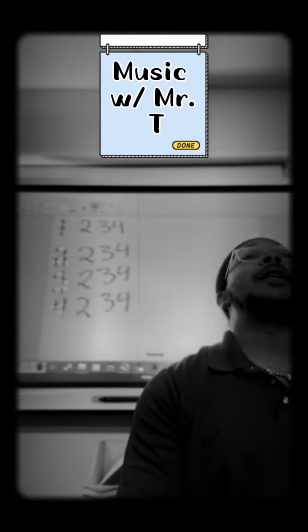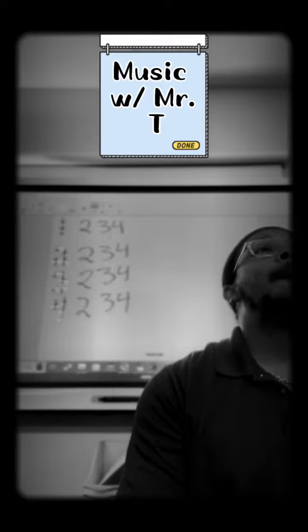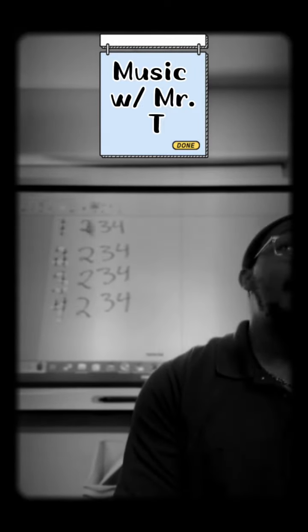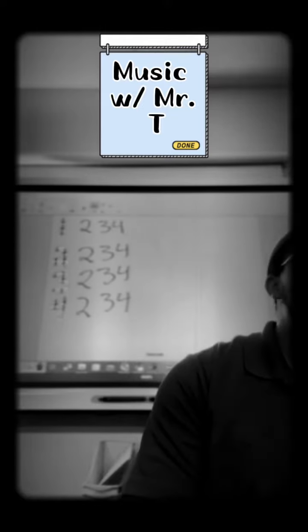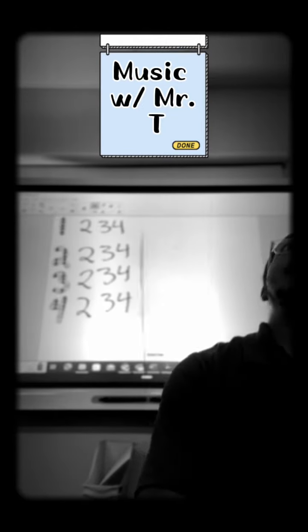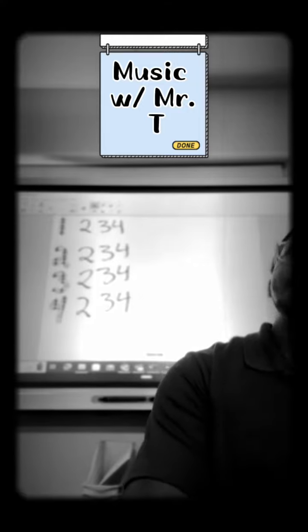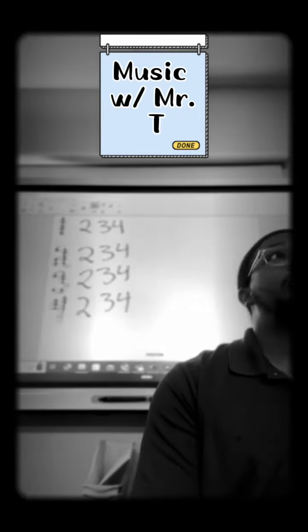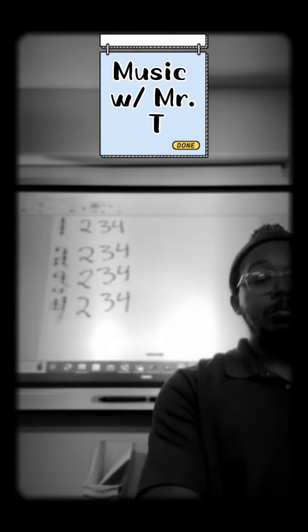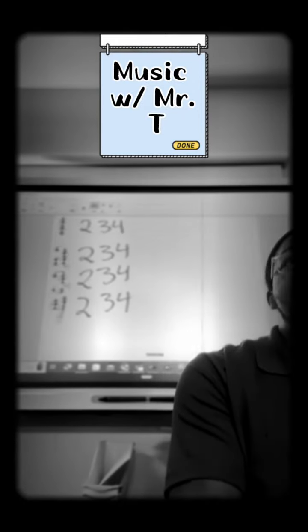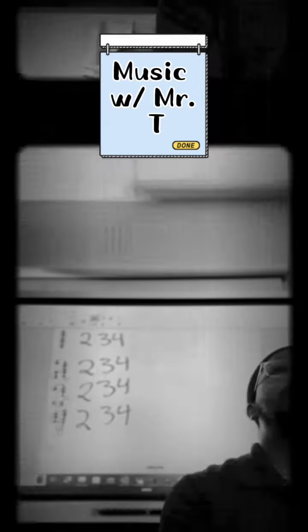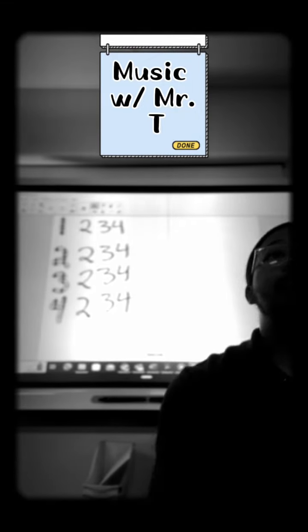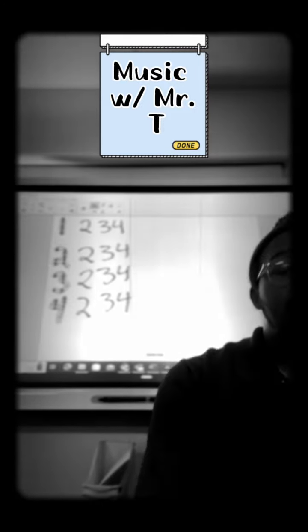Ready and one! One, two, three, four. Two, two, three, four. Three, two, three, four. Four, two, three, four. Five, two, three, four. Six, two, three, four. Seven, two, three, four. Eight, two, three, four. Nine, two, three, four. Ten, two, three, four. Eleven, two, three, four. Twelve, two, three, four.